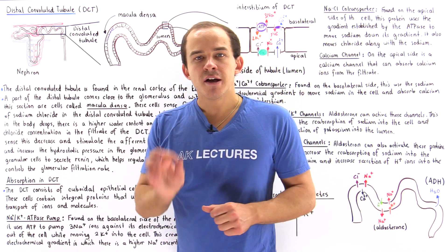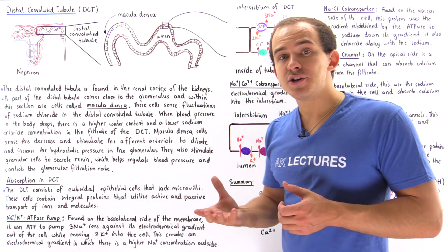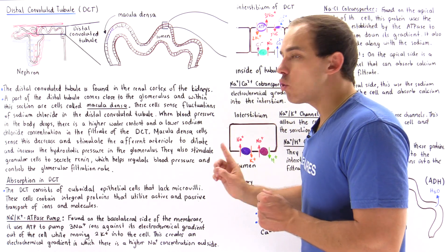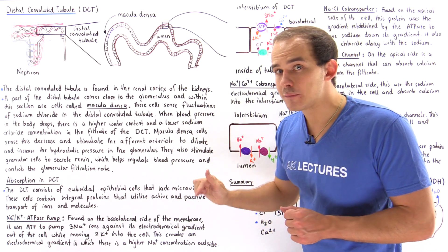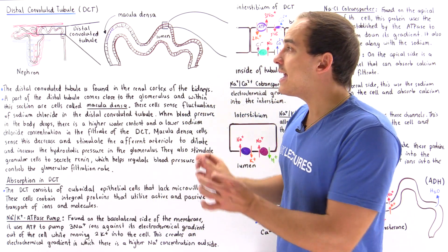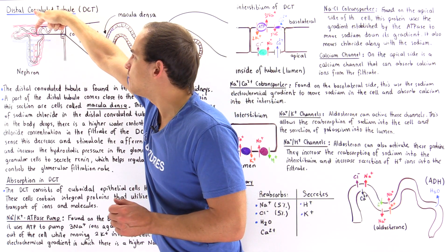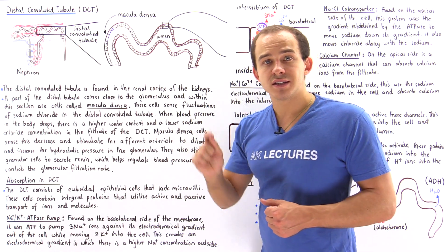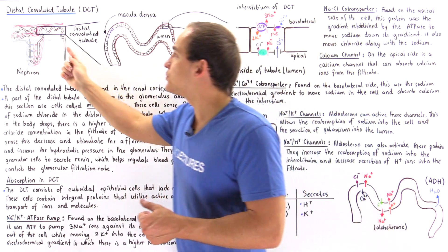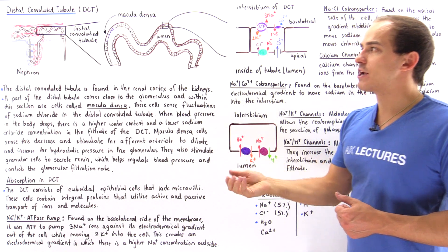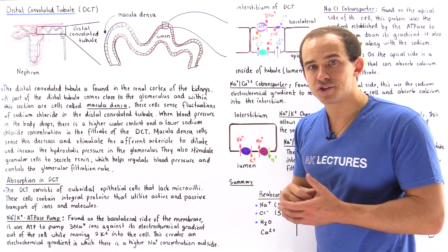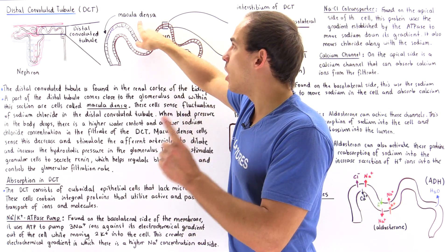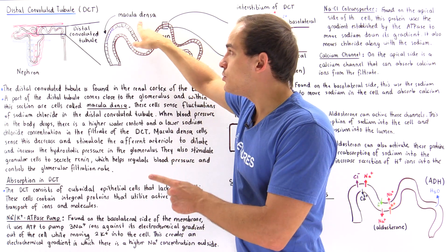The macula densa cells serve two important functions. First, they can sense fluctuations in sodium chloride concentration inside the lumen. If the sodium chloride concentration drops, the macula densa cells stimulate the afferent arteriole to dilate, decreasing resistance and increasing blood flow to the glomerulus. This increases hydrostatic pressure and regulates the glomerular filtration rate.